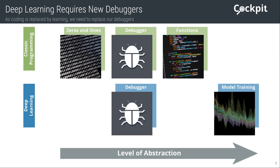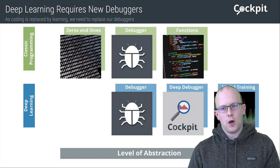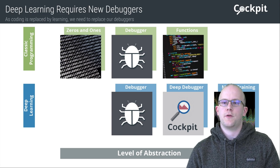In this case, using a classical debugger would be very similar to looking at the zeros and ones, since this can provide us with the exact values of all weights in the network. But these millions of numbers do not provide understanding. Instead, we need a debugger for deep learning that again takes all this low-level information and summarizes it into meaningful insights. With Cockpit, we provide such a debugger for deep learning.